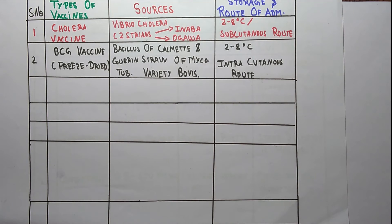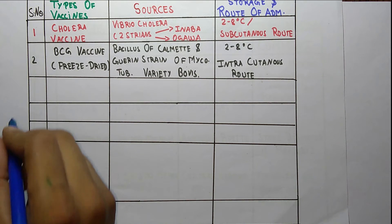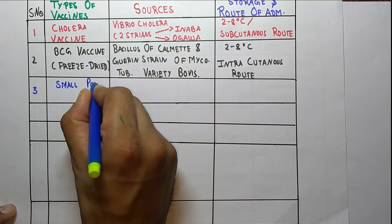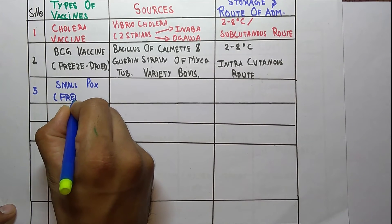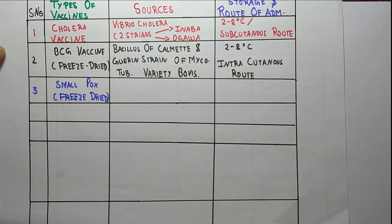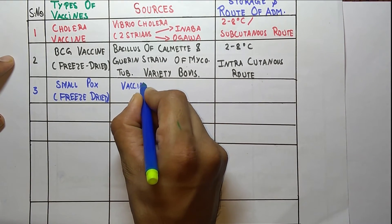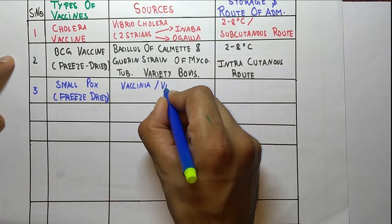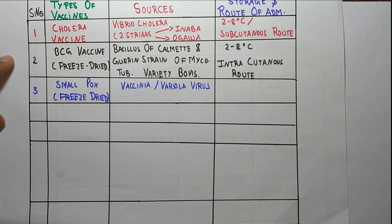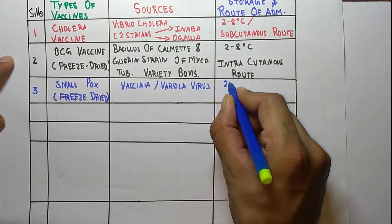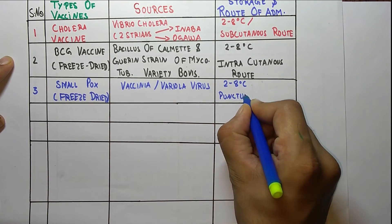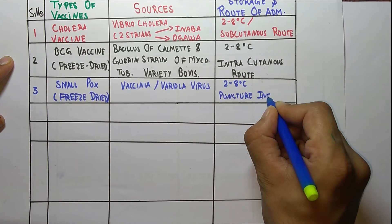The third vaccine is the smallpox vaccine, which is also freeze-dried. The source is vaccinia or variola virus. The storage temperature is 2 to 8 degrees Celsius, and it is administered by puncture into the skin.